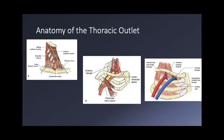Looking at where compression actually occurs: there's the venous triangle and the arterial and neurologic triangle. For venous TOS, it's primarily a fibrous band attached to the subclavius muscle that compresses the subclavian vein. The arterial and neurologic compression can come from fibrosis of the tendinous tissues of the subclavius muscle or from hypertrophy of the scalene muscles themselves.